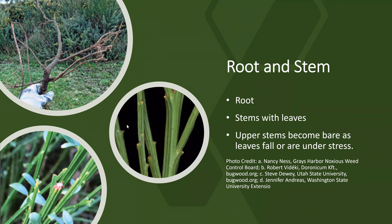Here we have the root and stems. On the upper left is a picture of the root showing the long taproot. On the bottom left is a picture of the stems with leaves on them, and the right-hand picture shows stems with no leaves. Their leaves fall off in the winter and they can also lose their leaves when under stress such as freezes or extreme heat. But what's interesting is the stems photosynthesize.